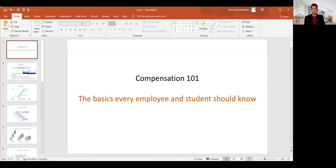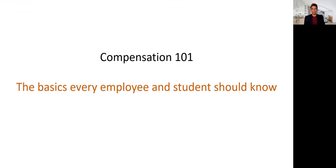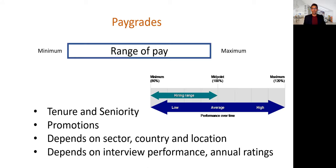This is Compensation 101 — the very basics which every employee and student should know about. One word you're going to hear all the time is 'pay grade.' A pay grade is nothing but the range which a company can offer in terms of compensation for a specific role or position within the company. There is a maximum, a minimum, and also a midpoint for this role.